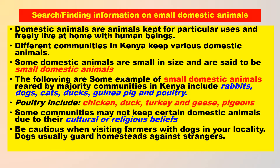Searching or finding information on small domestic animals. Domestic animals are animals kept for particular uses and freely live at home with human beings. Different communities in Kenya keep various domestic animals. Some domestic animals are small in size and are called small domestic animals. The following are some examples of small domestic animals reared by communities in Kenya: rabbits, dogs, cats, duck, guinea pig, and poultry.